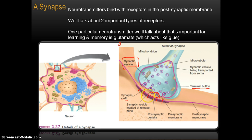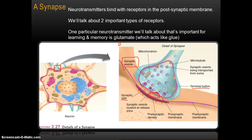When enough neurotransmitters bind with receptor sites, that may — depending on the type of neurotransmitter — initiate an action potential in the postsynaptic neuron, the one that picks up the neurotransmitters. The presynaptic neuron is the one that releases the neurotransmitters; the postsynaptic neuron is the one that receives them.